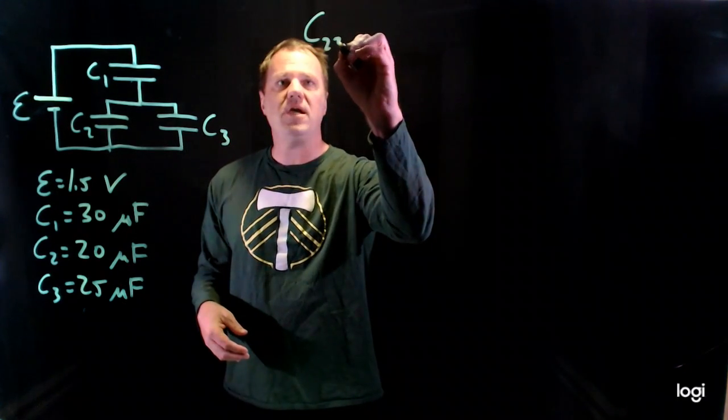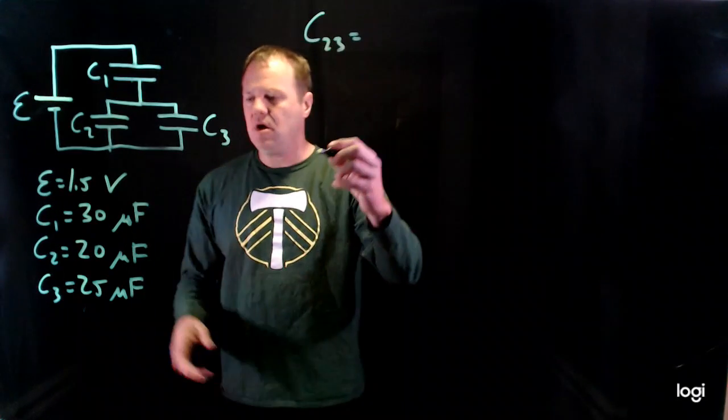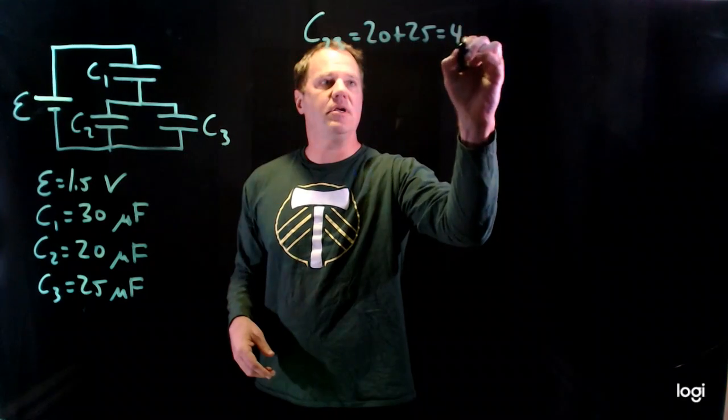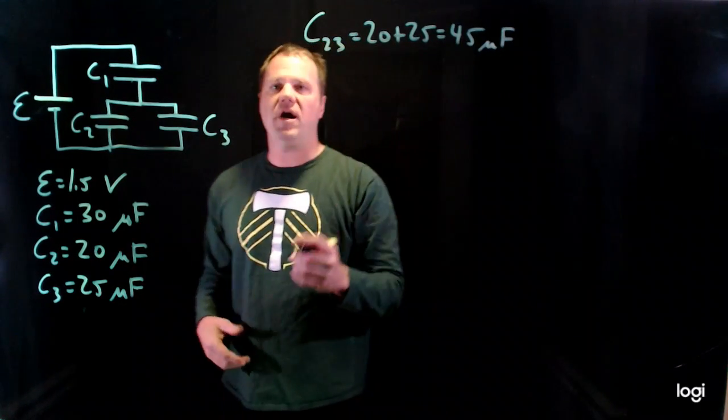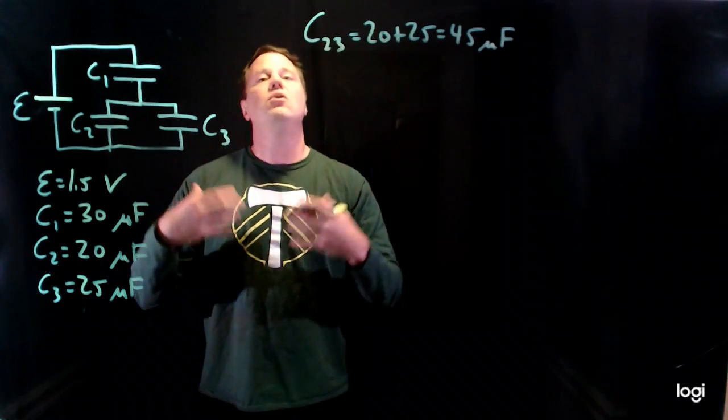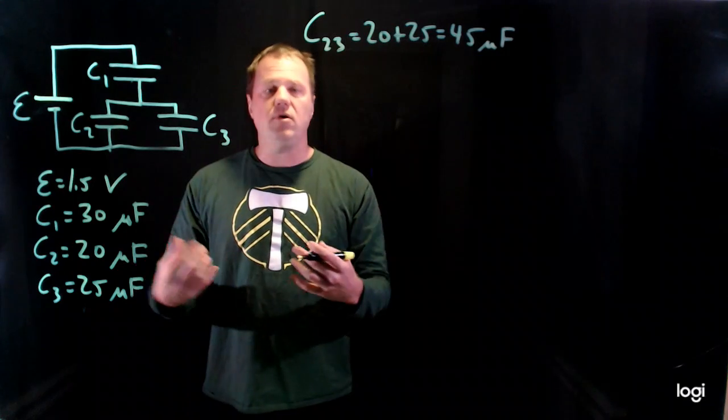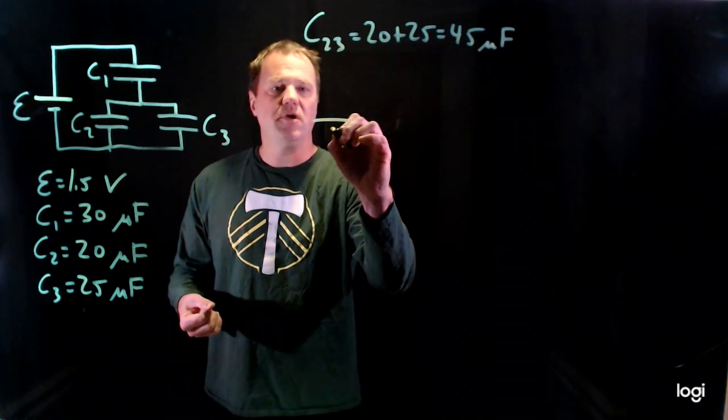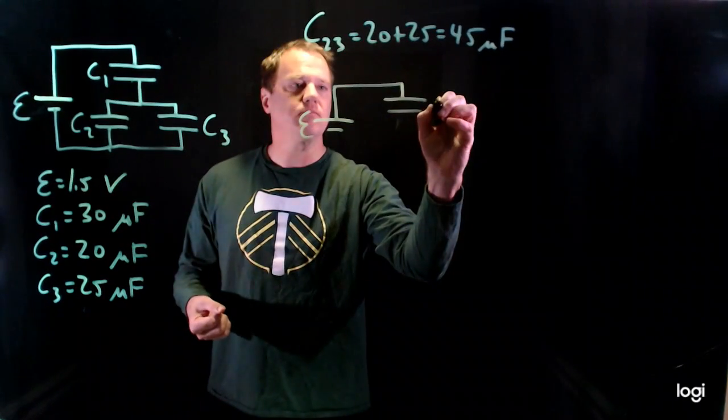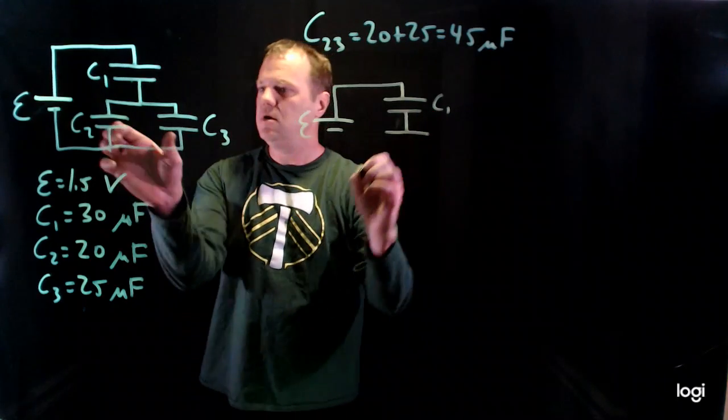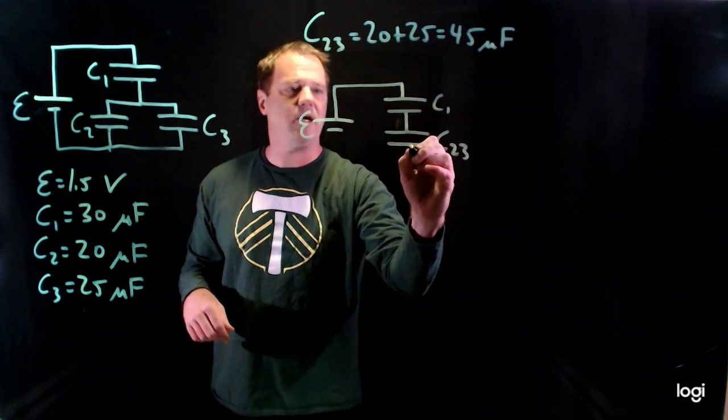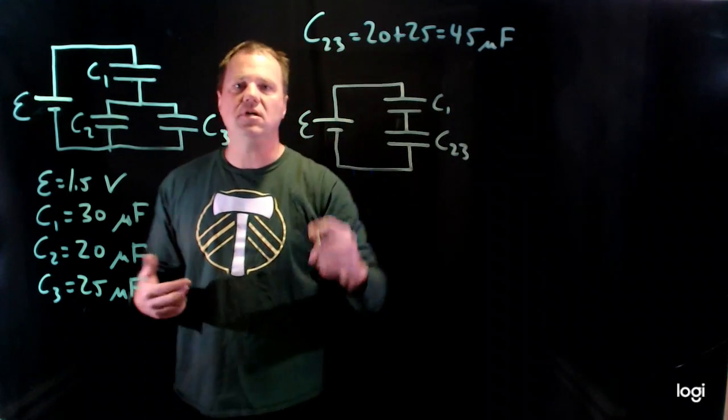So C23, the capacitance of two and three combined will be 20 plus 25 is 45 microfarads. So what I suggest you do when you calculate an equivalent capacitance, redraw the circuit with your new fictitious capacitor. So leave the battery alone, and we have capacitor one right here. We left that alone, and then we took two and three and combined them into a single capacitor with this collective behavior. And now our circuit looks like this, a little bit simpler.